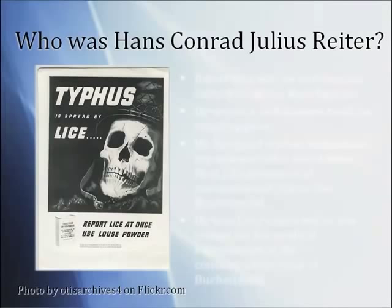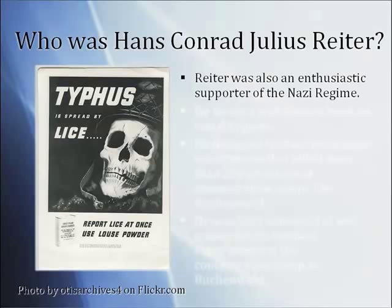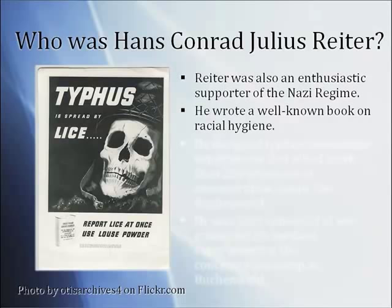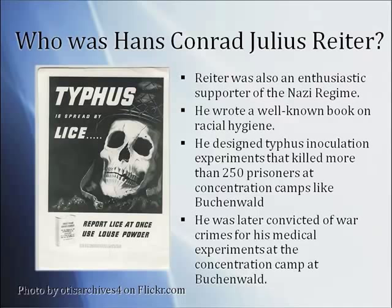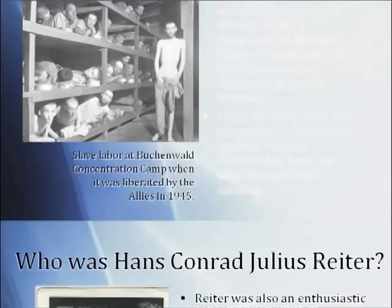Who was Hans Conrad Julius Reiter? He was an enthusiastic supporter of the Nazi regime. He wrote a well-known book on racial hygiene, in which he advocated euthanizing, sterilizing, and carrying out genocide against people of other races. He designed typhus inoculation experiments that killed more than 250 prisoners at concentration camps like Buchenwald, and was later convicted of war crimes for these medical experiments.